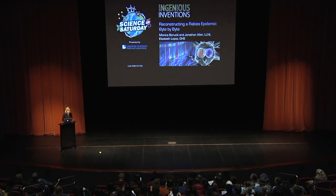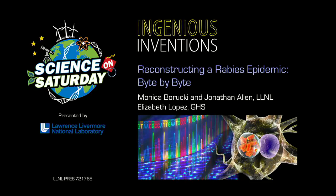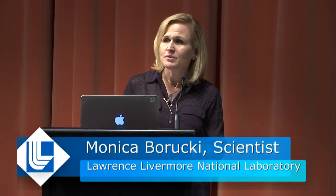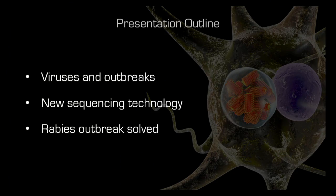Good morning, thank you all for showing up. Today we're going to be talking about reconstructing a rabies epidemic bite by bite — meaning computer bites. I've been doing bacteriology and virology for about 20 years now, focusing on evolution. First I'll tell you about viruses and the types of outbreaks they cause, then Jonathan will discuss new sequencing technology, and finally we'll cover a rabies outbreak in Northern California and how we used next-generation sequencing to understand it.